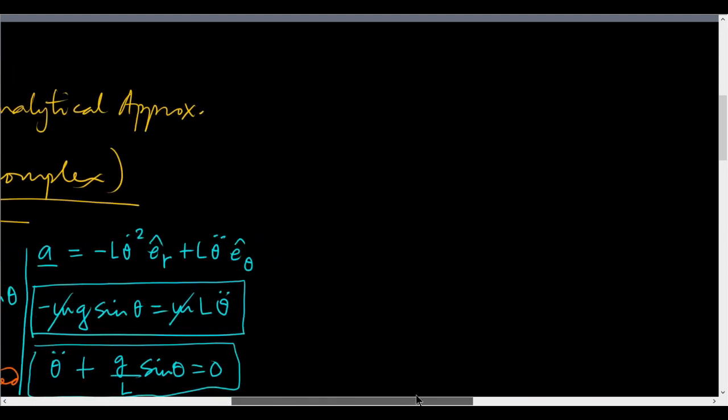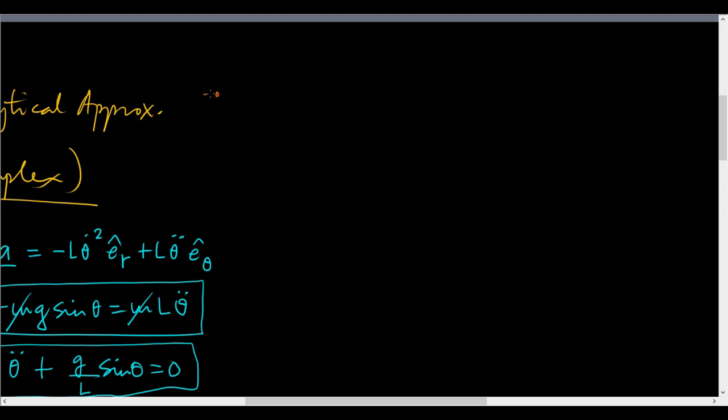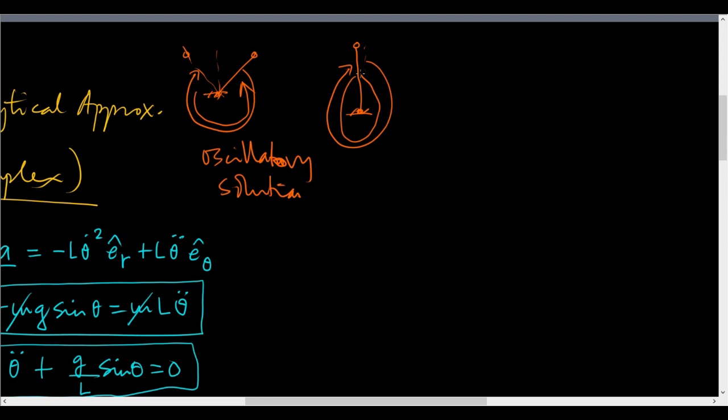This pendulum has three kinds of motions. One is you release it at some angle that is not vertical and then it oscillates to a symmetrical position and then goes back again. This is the oscillatory solution. There is an unstable solution: if there is a small perturbation, it may go like this and come back or it may go round and round. There is a whirling solution.